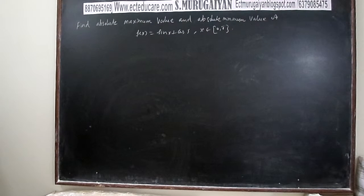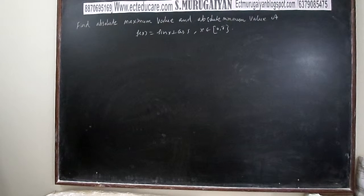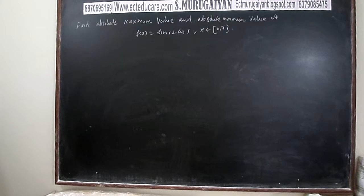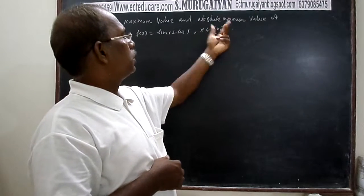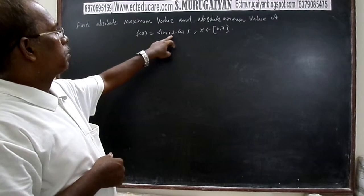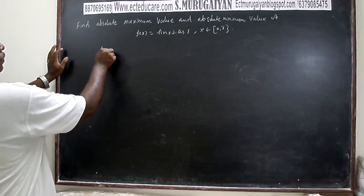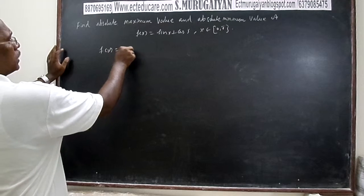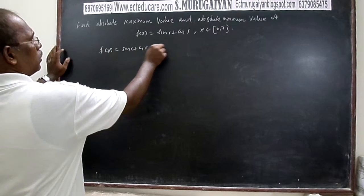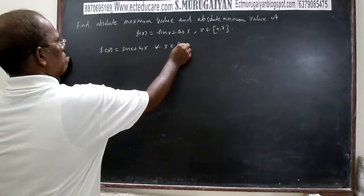Hello students. In this class, we will discuss questions based on absolute maximum and absolute minimum of a given function in a given closed interval. The given closed interval is [0, π]. The function is f(x) = sin x + cos x. Let us differentiate f(x) = sin x + cos x, where x belongs to the closed interval [0, π].